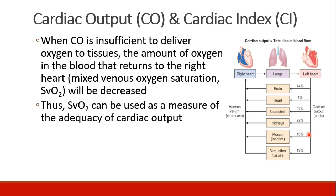When cardiac output is insufficient to deliver enough oxygen to tissues, the tissues consume so much oxygen that when we examine the blood returning to the right heart — called the mixed venous oxygen saturation, or SVO2 — that number will be decreased more than usual. This shows there's more oxygen consumption for the given amount of blood being sent to the tissues, so SVO2 is actually useful as a measure of the adequacy of cardiac output.